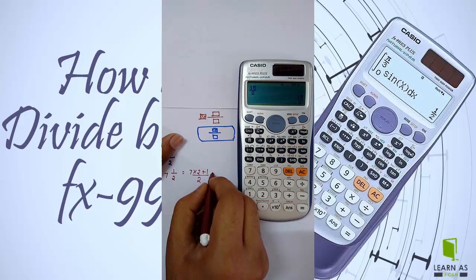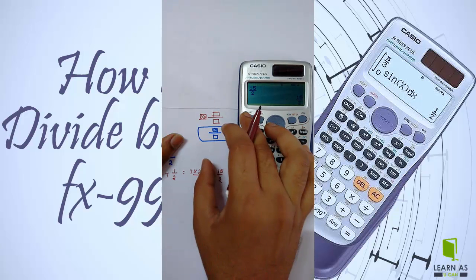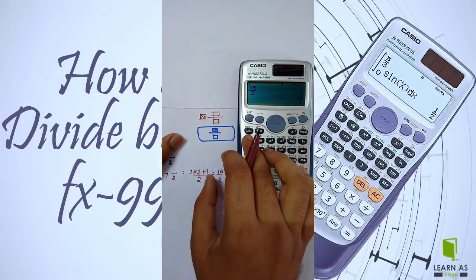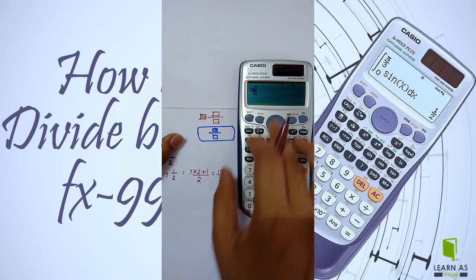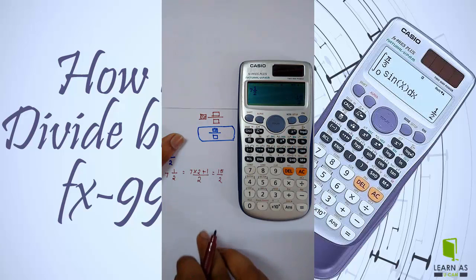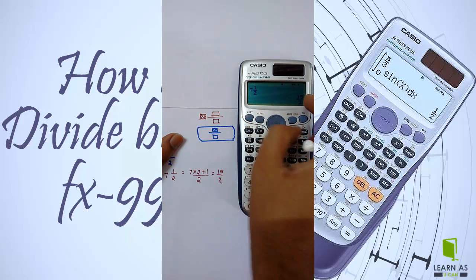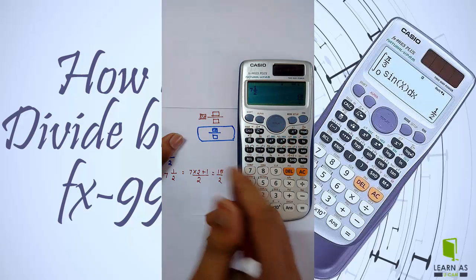7 raise to 1 by 2. If we see here, I'm getting it only in this form. Suppose if I want this result in a different form - for that I have to select the proper mode.